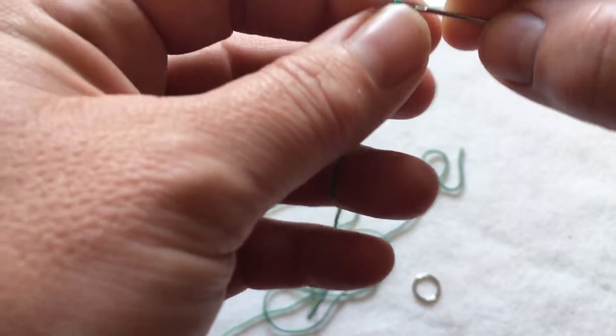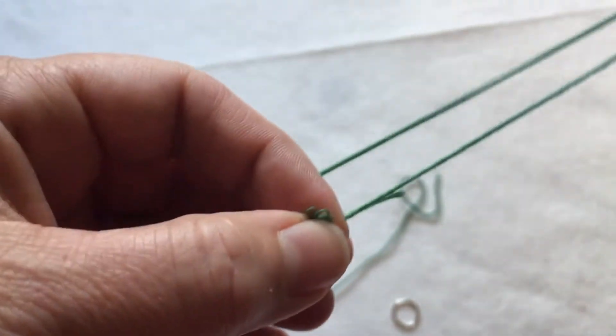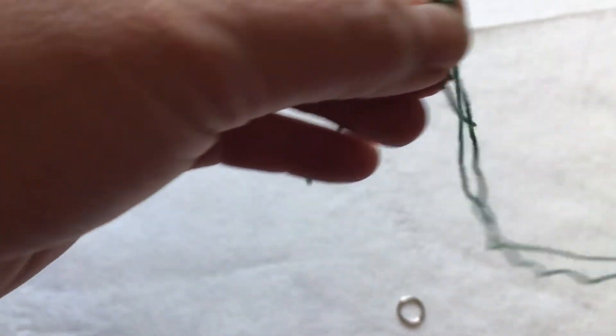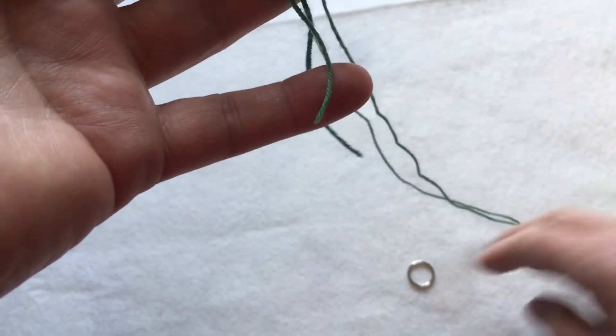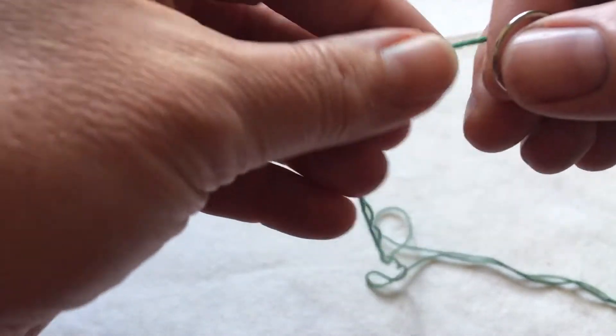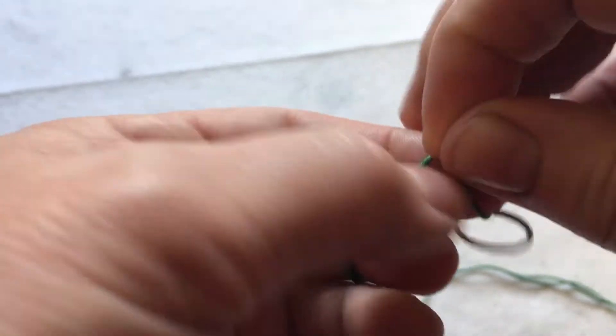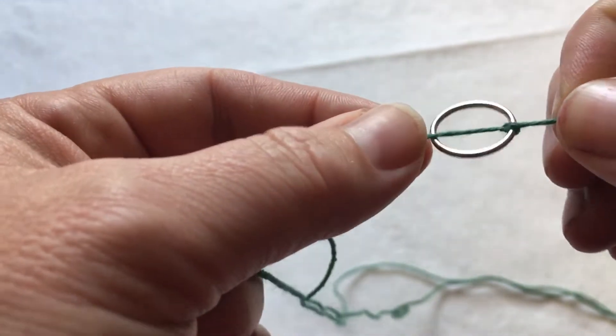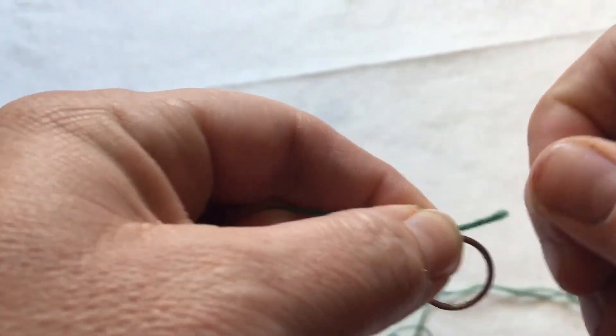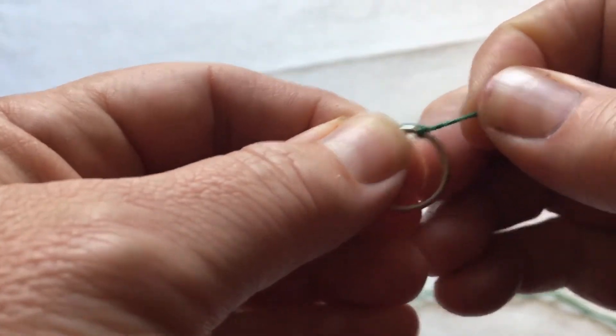You'll thread your needle and then move the needle so it's nearly halfway down the thread, so you have a longer and a shorter end. It just means you've got less thread to pull through at once, which makes it a little bit easier. And you're going to tie your longer end around the ring in a single knot, leaving about an inch for the tail, so about the length of your thumbnail.